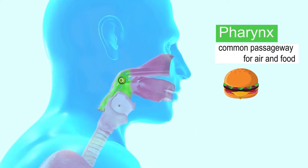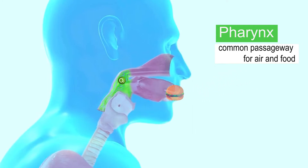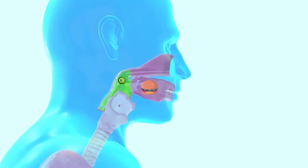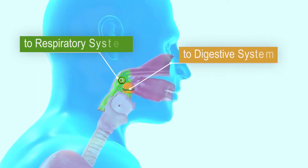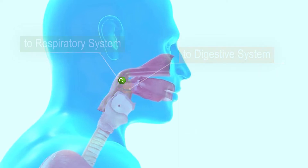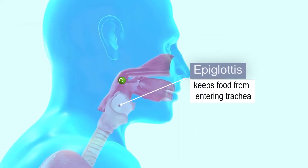The pharynx is a common passageway for food and air. It leads to two passageways: the esophagus, which leads to the digestive system, and the trachea, which leads to the respiratory system. There is also a structure called the epiglottis, a flap of tissue that opens and closes to allow entrance either to the digestive system or to the respiratory system.